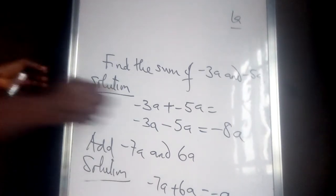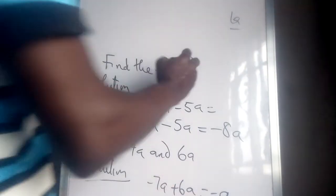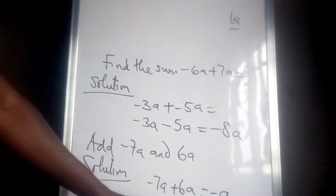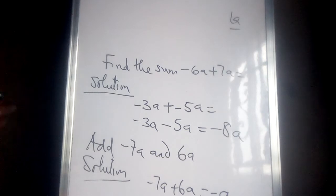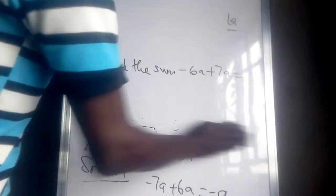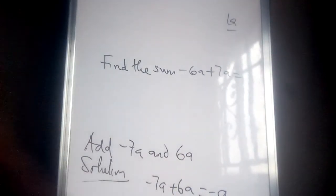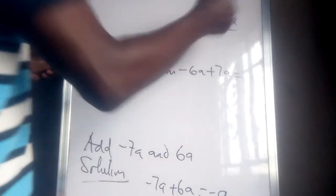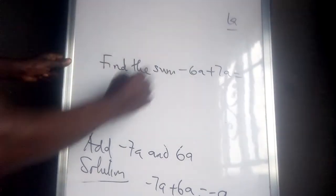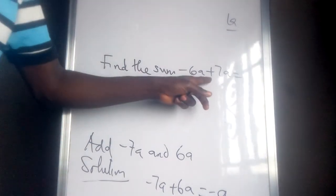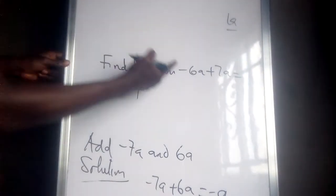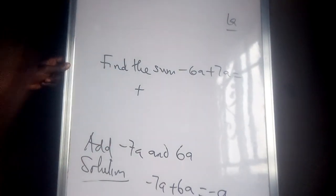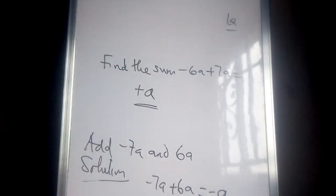Now suppose we are asked to find the sum of minus 6a plus 7a — this is just the reverse of the previous example. Between 6a and 7a, which is bigger? 7a is more than 6a, so take the sign that 7a possesses, which is positive. Multiply the sign of 6a by the sign of 7a: minus times plus is minus, so subtract 6a from 7a. The result is positive a.